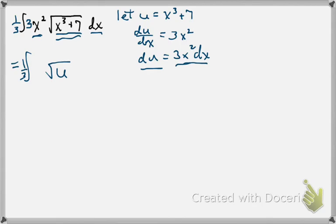Now my substitution is complete. Because I have 3x squared dx, which we know is equal to du. Now this is the integral we're working on. A much simpler integral.